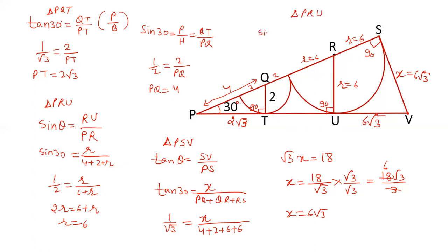If we apply tan theta, then it will be perpendicular upon base, RU upon PU. Tan 30 is 1 by root 3. RU is 6. And PU we have to calculate. So PU will be 6 root 3. So PT to U is 6 root 3. If this length is 6 root 3 and PT is 2 root 3, TU will be 4 root 3.